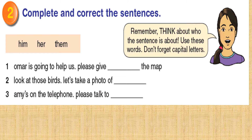Number one: Umar is going to help us — please give the map. First of all, we start with a capital letter. Umar is going to help us. Full stop. Start a new sentence, so we use a capital letter also. Please give him the map. We are talking about Umar — Umar is a boy, so we use 'him'. Put a full stop at the end.